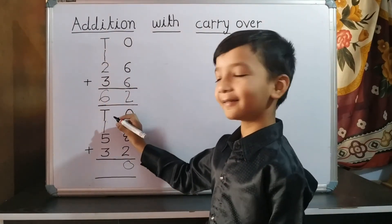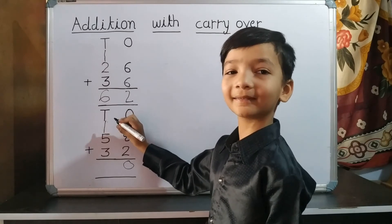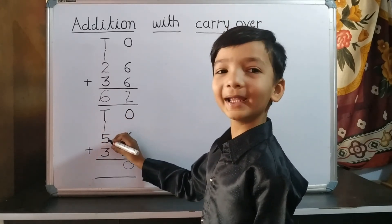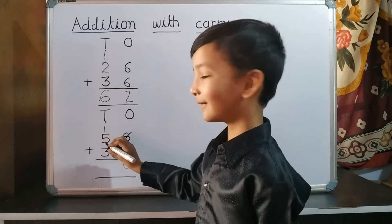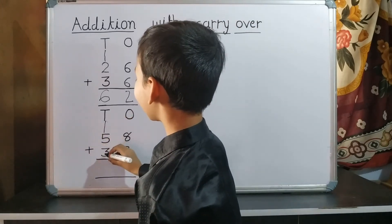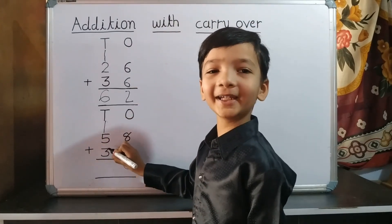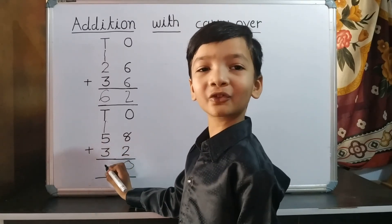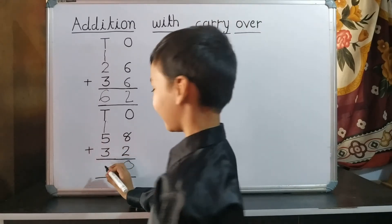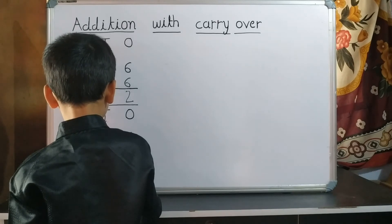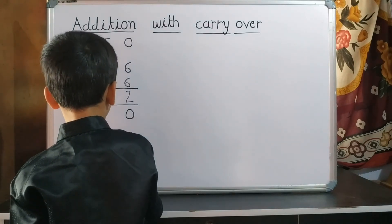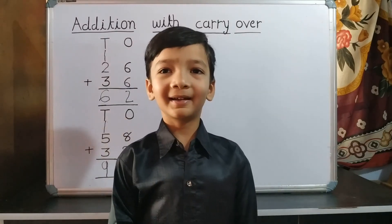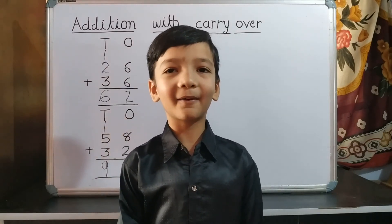Now we do addition of ten's place. 1 plus 5 equals 6. 6 plus 3 equals 9. So we write 9 on ten's place. 90 is our answer.